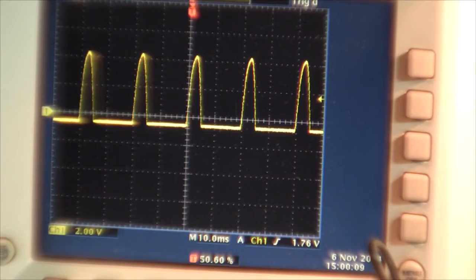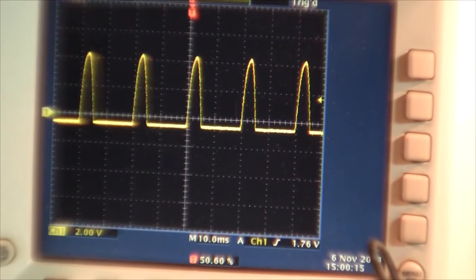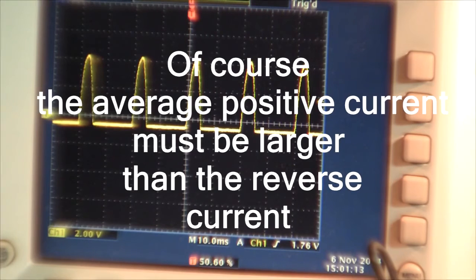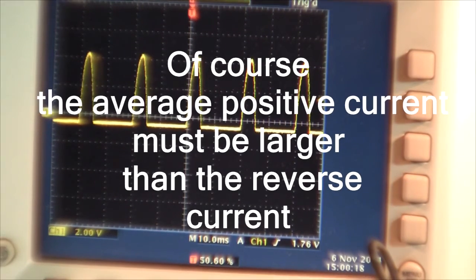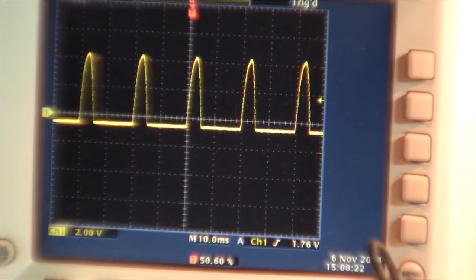Every half cycle reverses the current polarity and the gas which was created before will be absorbed in the negative half cycle. And it should rejuvenate the battery. That's what they say. I cannot guarantee that it's correct. I do not know.